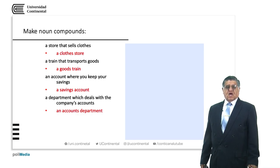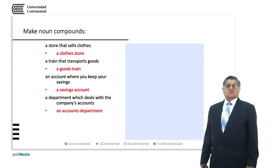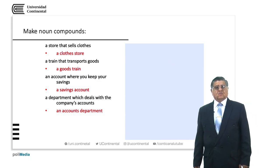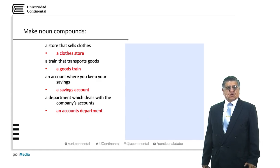Notice: we are using 'an' and 'accounts' is in plural, but 'an' actually refers to the department, not to accounts. As before — 'a clothes store' — 'clothes' is in plural, but 'a' is not referring to 'clothes', it is relating to 'store'. In the same form: 'a goods train' — 'a' is referring to 'train', not to 'goods'.